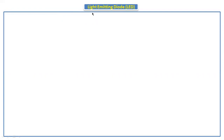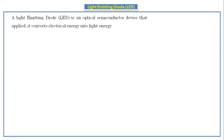Hello everyone. Today we are going to discuss about the light emitting diode, that is LED. A light emitting diode is an optical semiconductor device that emits light when voltage is applied. It converts electrical energy into light energy.